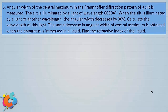Now let's take another question on the angular width of the central maximum. The angular width of the central maximum in a Fraunhofer diffraction pattern of a slit is measured. The slit is illuminated by light of wavelength 6000 angstrom. When the slit is illuminated by light of another wavelength, the angular width decreases by 30%. Calculate the wavelength of this light. The same decrease is obtained when the apparatus is immersed in a liquid — find the refractive index. Since the width decreases by 30%, the new angular width is 70% of the original value.